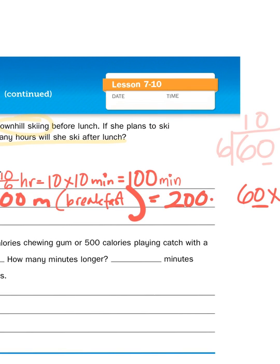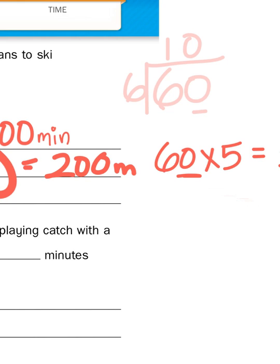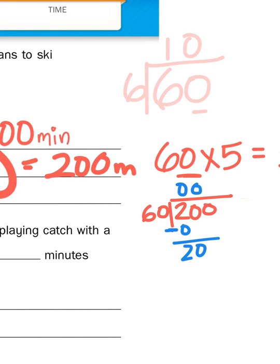Now how many hours is two hundred minutes? Well, I need to break up two hundred into groups of sixty so I'm going to divide two hundred by sixty. With long division I would ask myself how many groups of sixty can I get out of two? Well that would be zero. So I jump ahead to the second amount, how many groups of sixty can I get out of twenty? Well again that would be zero because zero times sixty would give me zero.